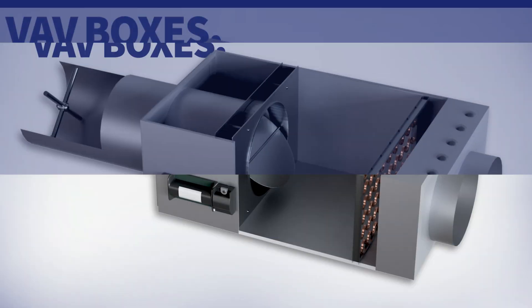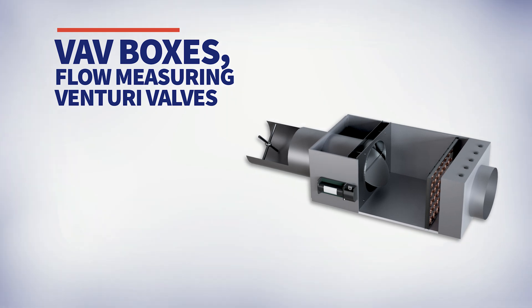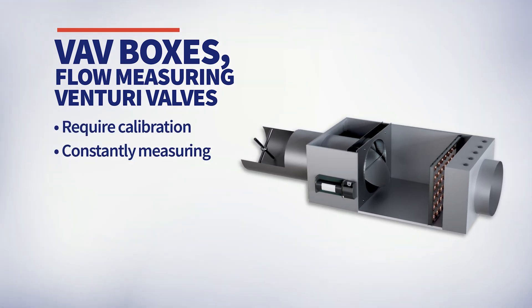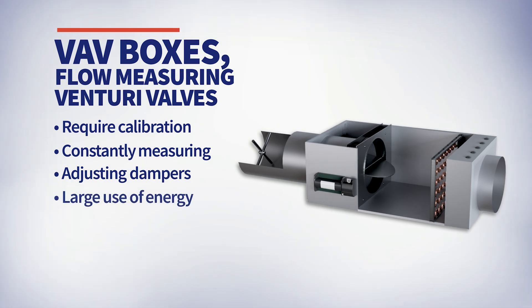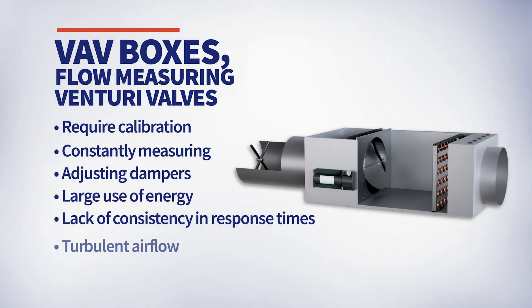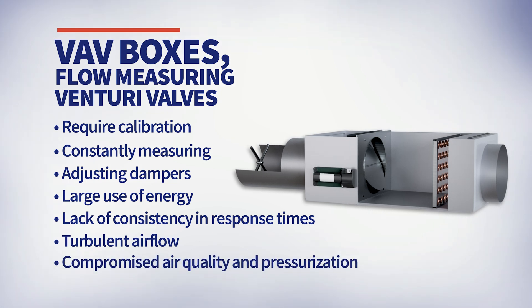Systems like VAV boxes or flow measuring Venturi valves rely on sensors that require calibration and are constantly measuring flow and adjusting dampers using significant amounts of energy. The lack of consistency in response times can cause turbulent airflow, compromising air quality and pressurization.